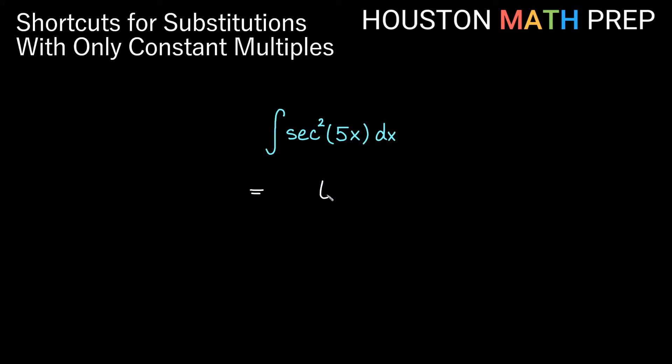So what we can do for a shortcut for this one is say tangent of 5x. But now the reciprocal of the multiple inside is going to come out. So I'll actually get one-fifth tangent of 5x plus c.